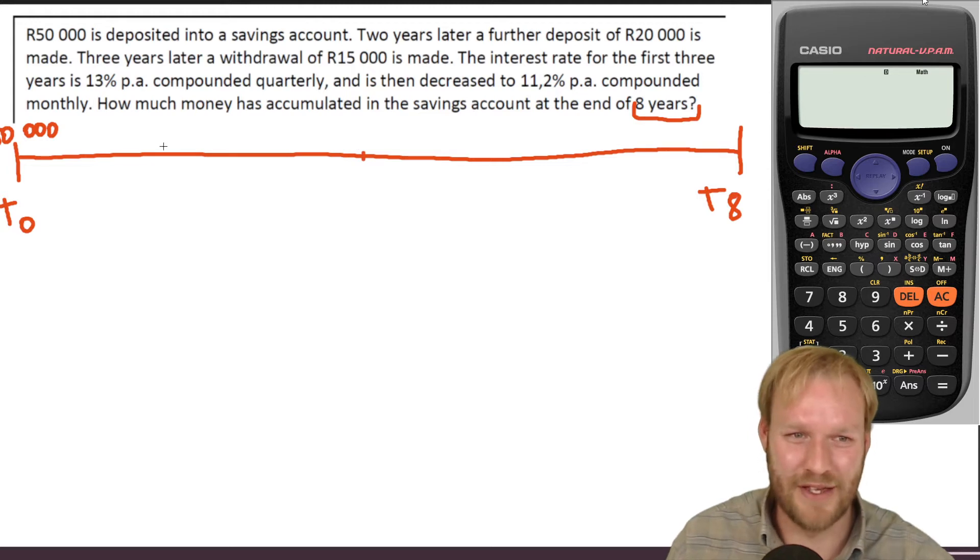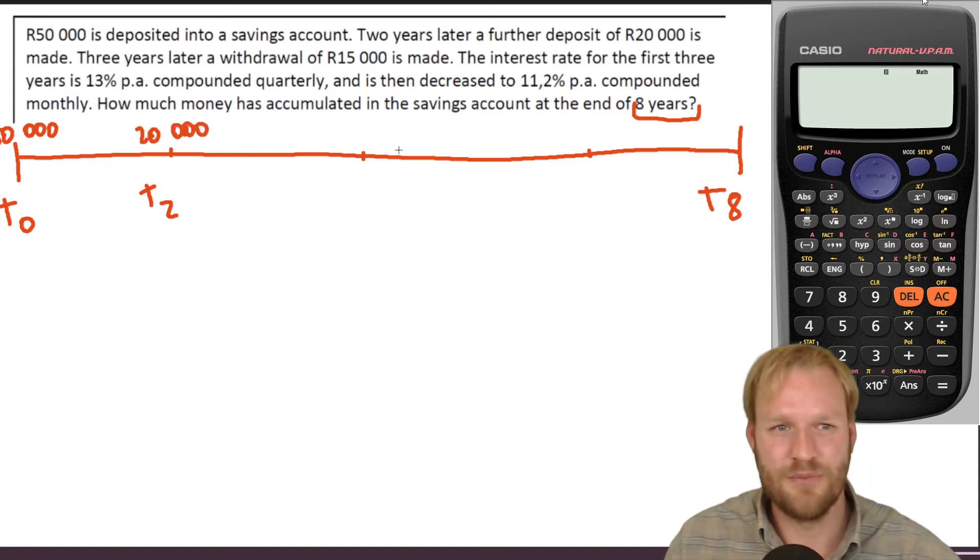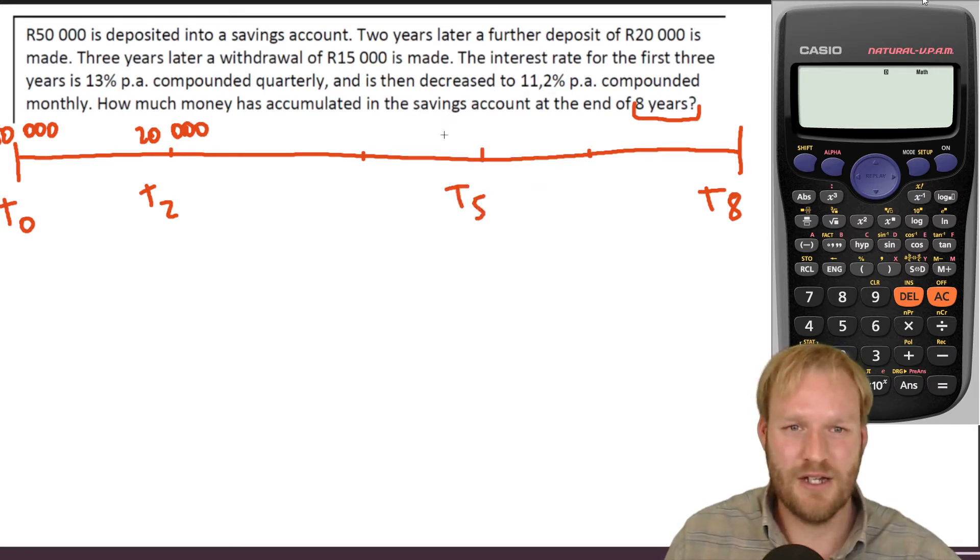So kind of T four would be over there. T two doesn't have to be perfectly to scale, but I think it's useful. So yeah, two years later, a further deposit of 20,000 is put in. So 20,000 Rand. Three years later, a withdrawal is 15,000 Rand. So that, as I said, is sort of over there at T five.